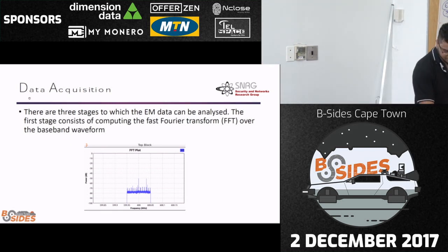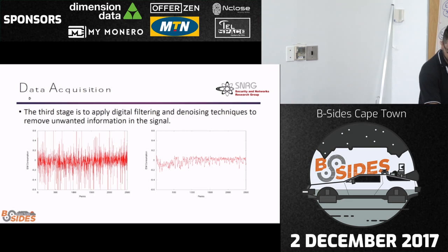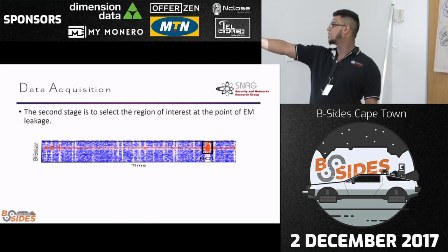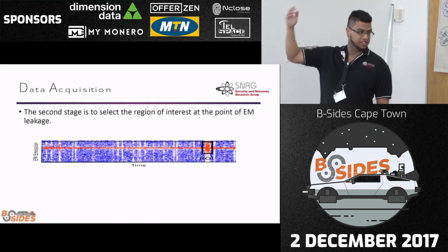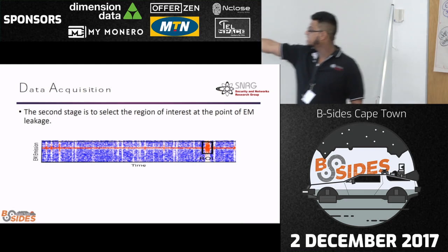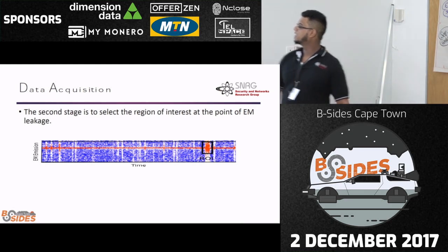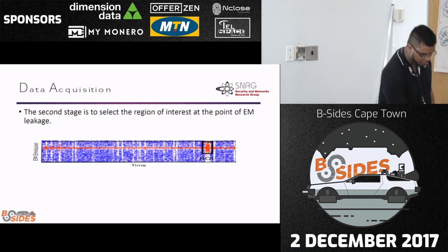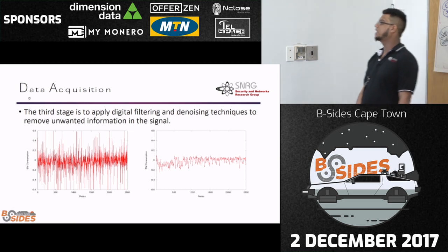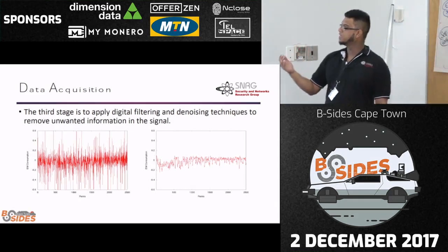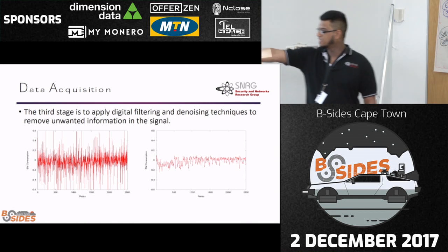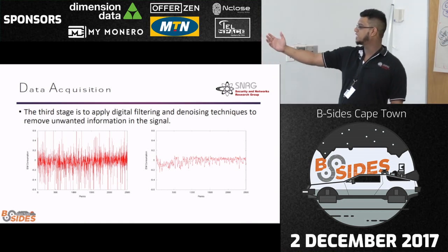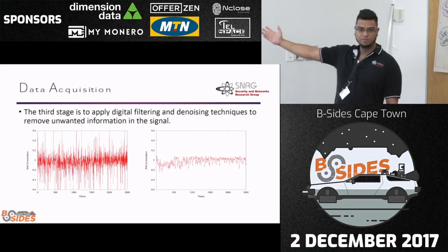The second step is to find the region of interest — monitoring the EM frequency across time. You execute the AES algorithm, and there's a big EM spike that's actually where the AES-128 encryption algorithm is executing. The third stage of data acquisition is denoising and removing unwanted signal. The raw captured signal, as we apply our denoising techniques, becomes much smoother and readable.